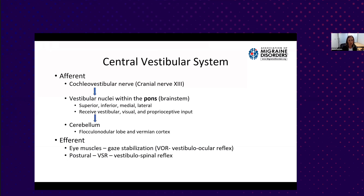From there, we have projections into the cerebellum mainly, but also the cerebral cortex. And then the efferent pathways: there's a strong connection between the inner ear and the eye muscles, especially with the semicircular canals, which enables us to keep focus when our head is moving—gaze stabilization, or the vestibulo-ocular reflex. The postural pathway is closely connected to the utricle and the saccule, our gravity sensors, for keeping our body upright.